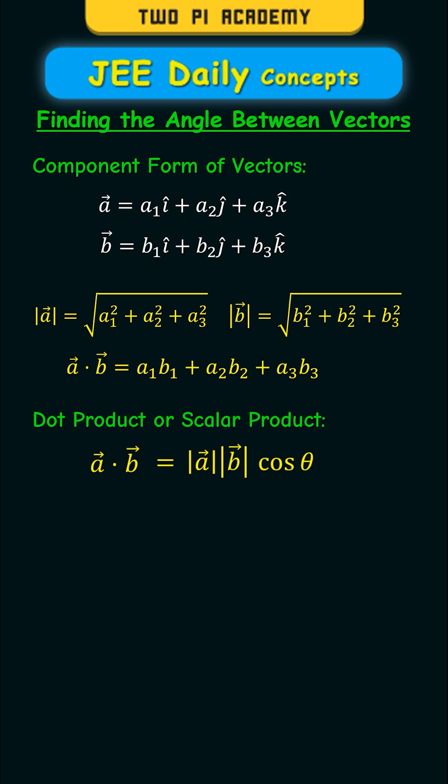And the dot product of the vectors is the sum of the products of corresponding components. And by using them, you can find the cos theta as the dot product of the vectors by the product of the magnitudes of vectors.